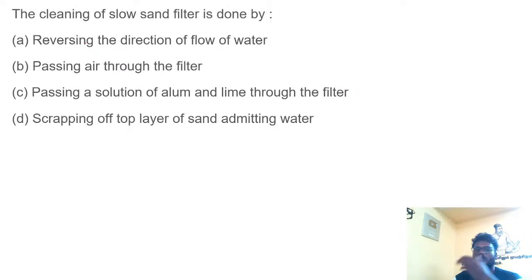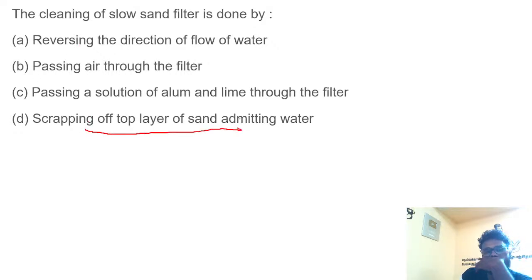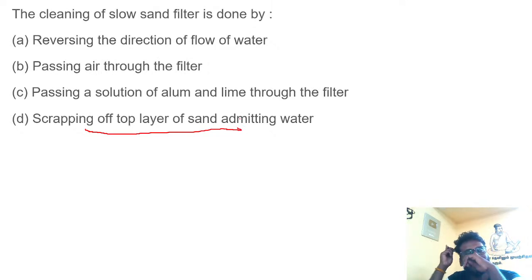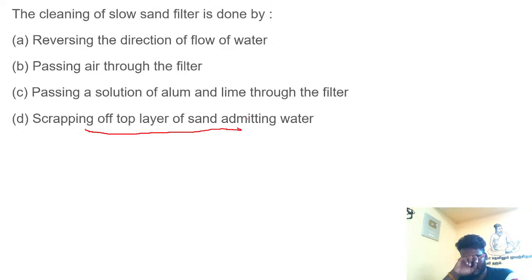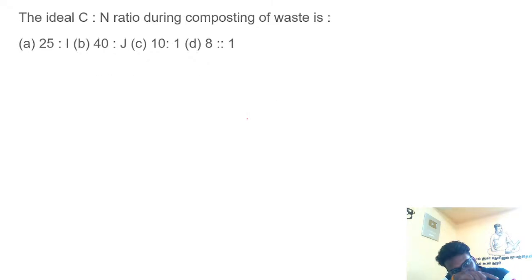Cleaning of slow sand filter: it is cleaned by scrapping of the top layer of sand. Rapid sand filter is cleaned by backwashing. That is important — scrapping for slow sand, backwashing for rapid sand.